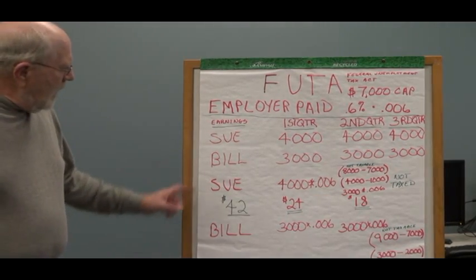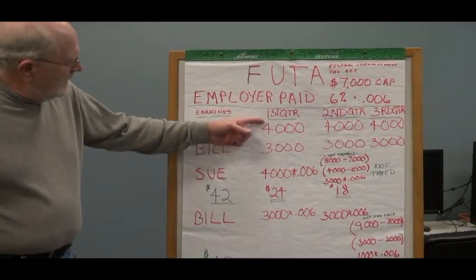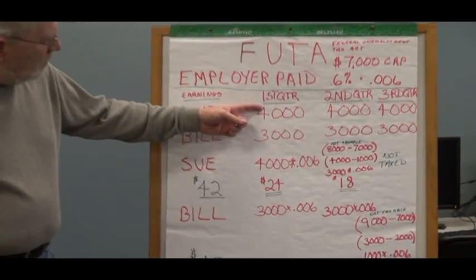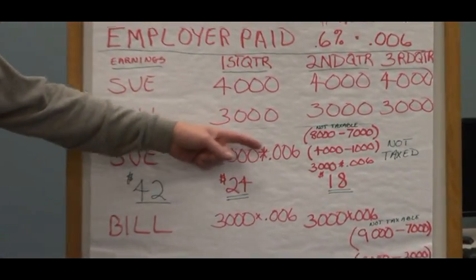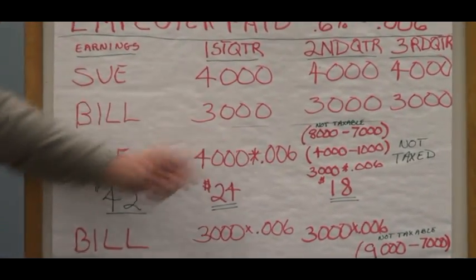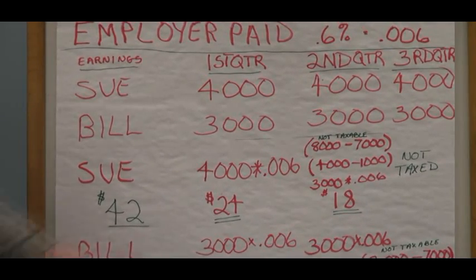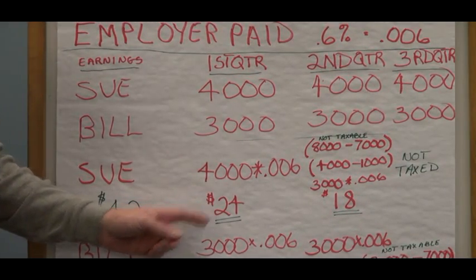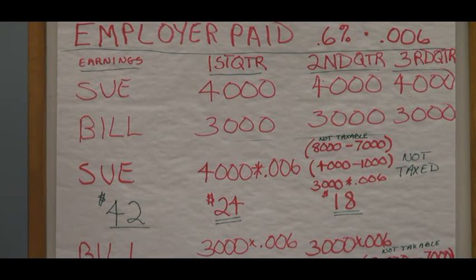To calculate Sue's FUTA taxes, we would take the entire amount of $4,000, multiply it times 0.006, and we get $24. That's how much the employer would pay for Sue in the first quarter.